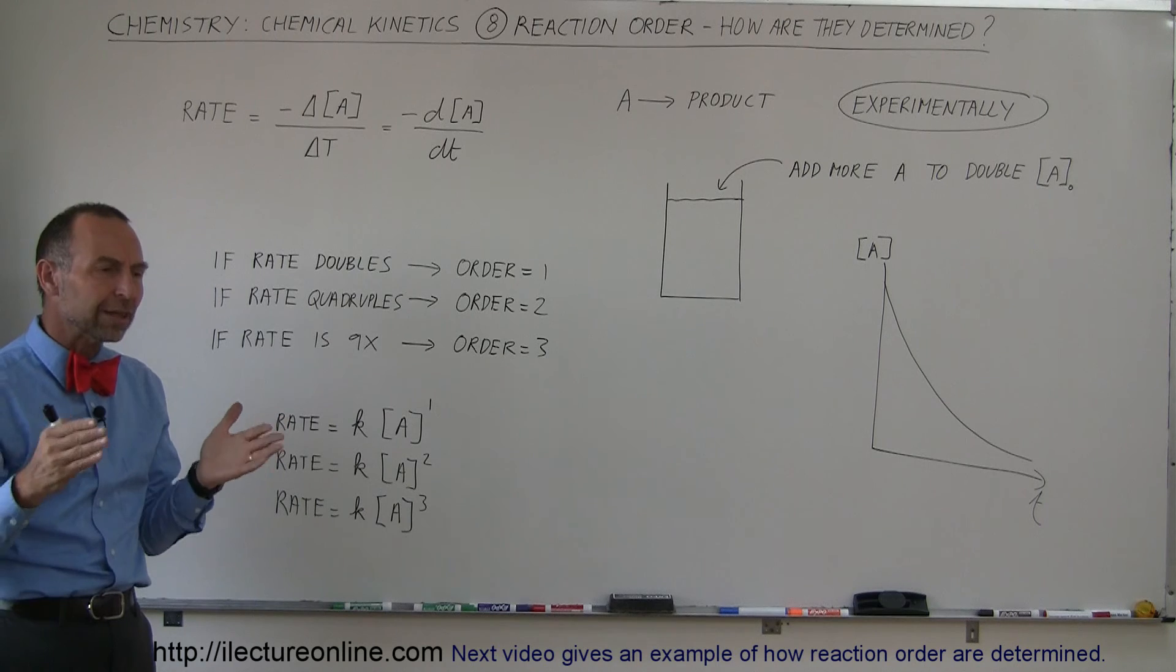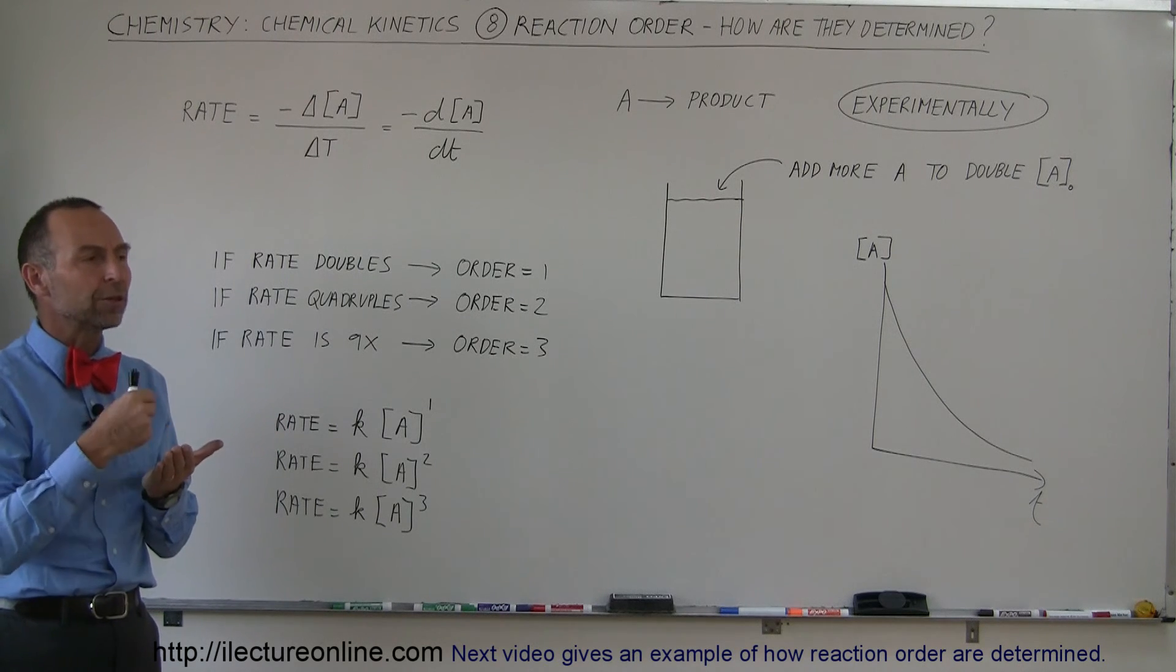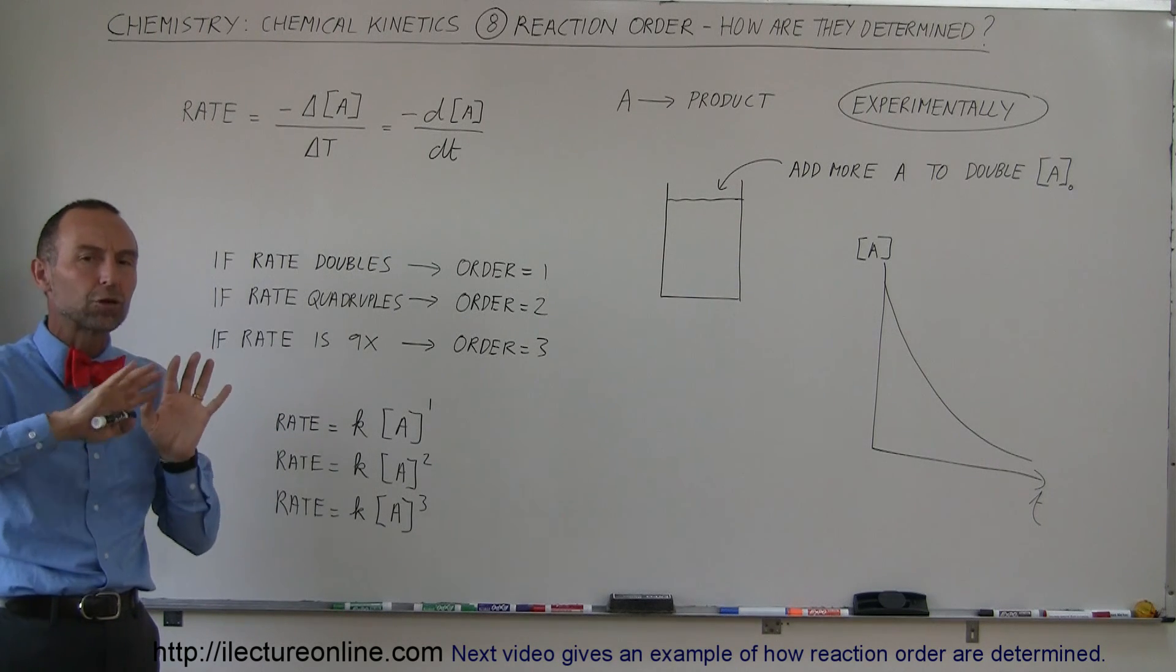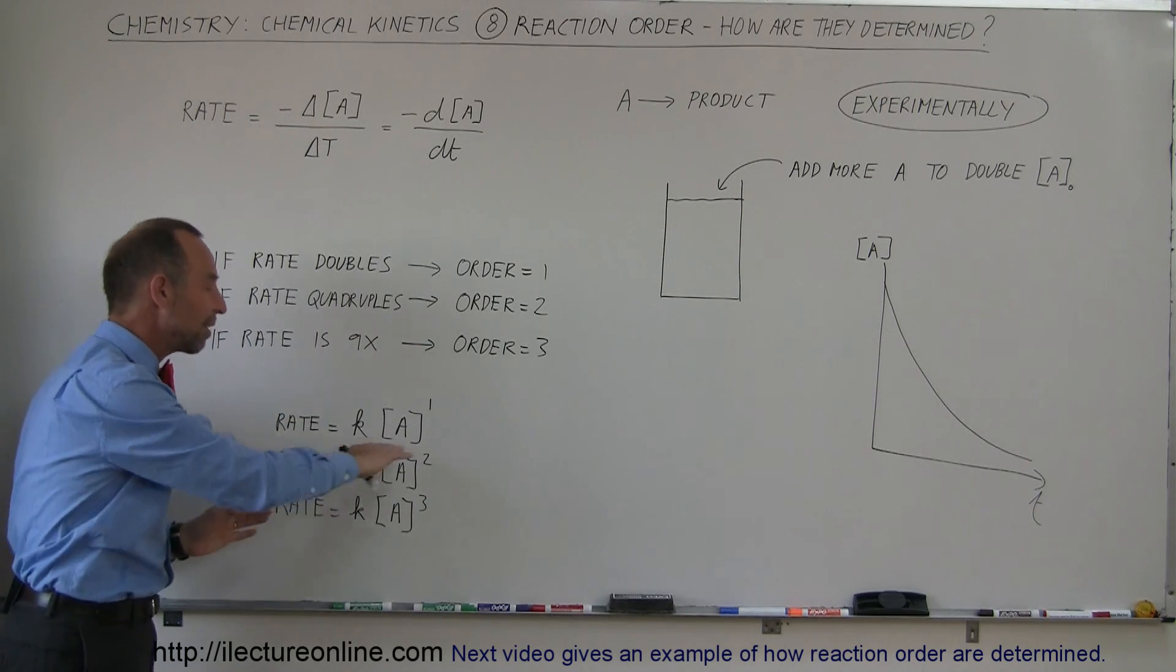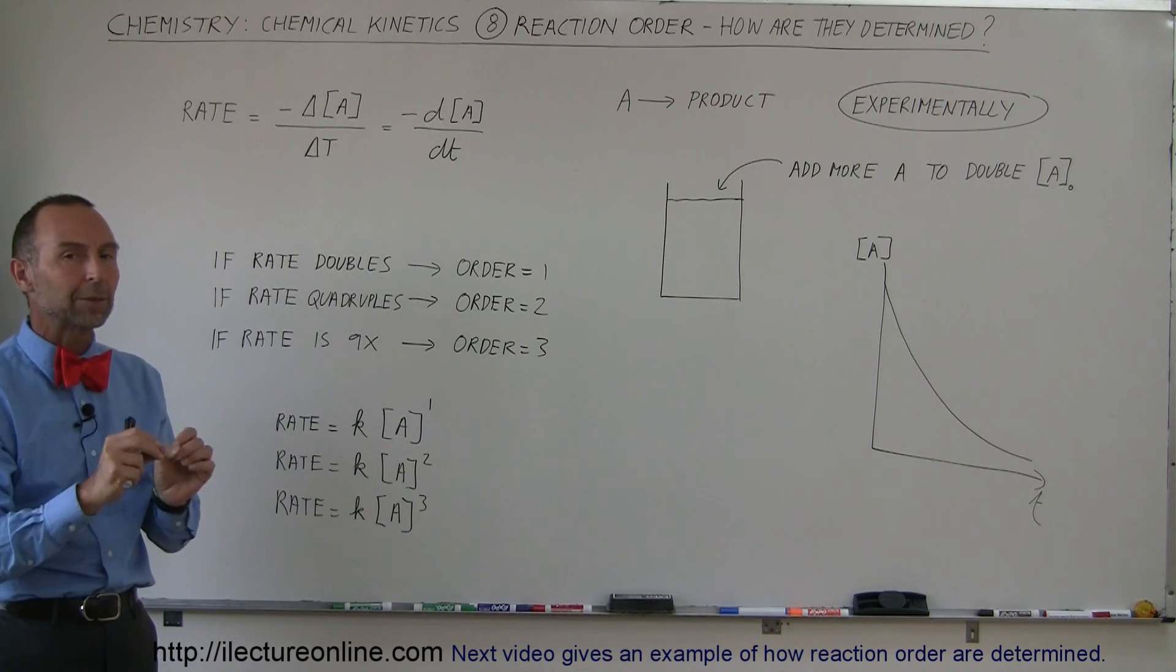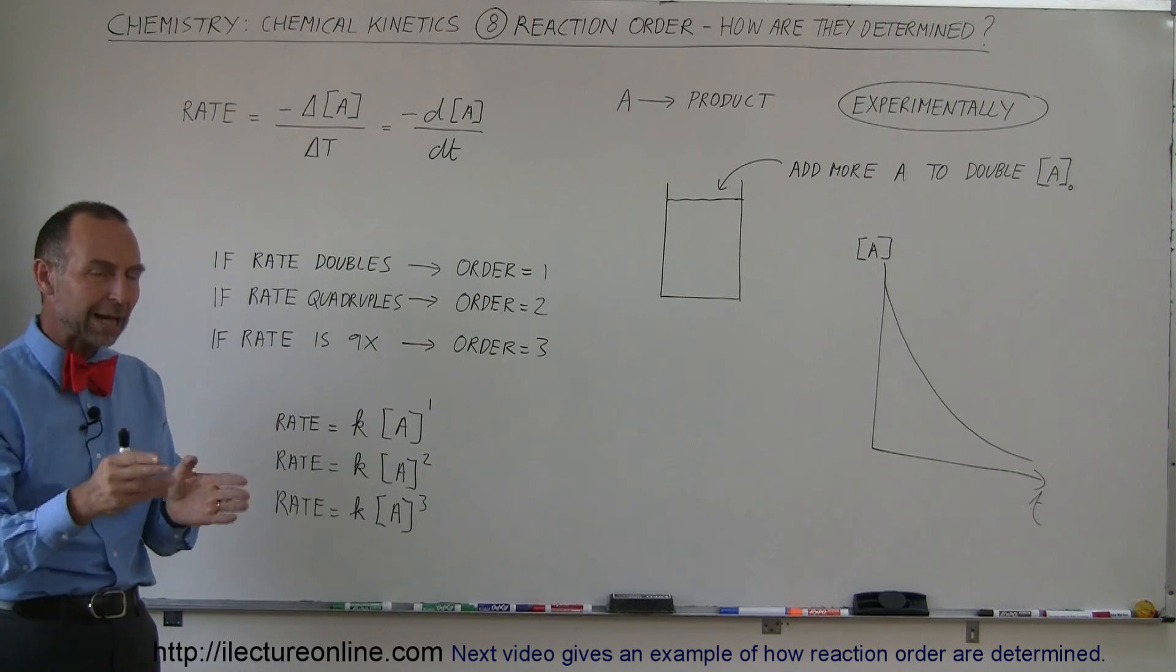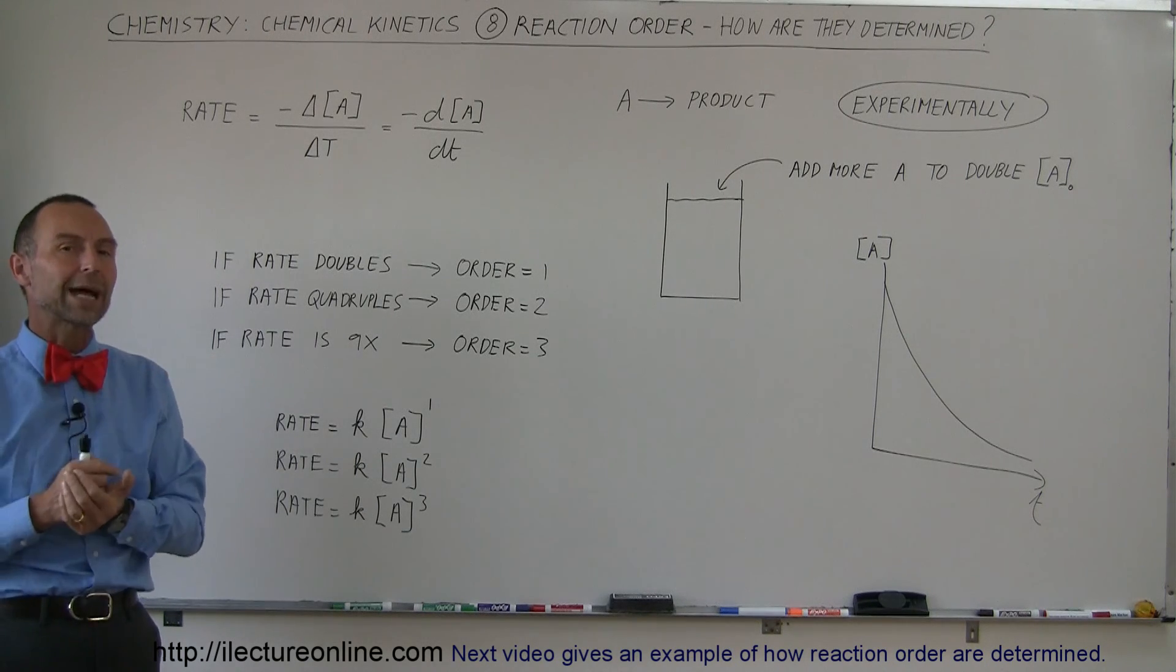When there are multiple reactants, you have to be careful. There are methods we use to try to exclude the influence of other reactants, because it's not always as straightforward as presented here. We want to eliminate the influence of other reactants when we're studying just one.